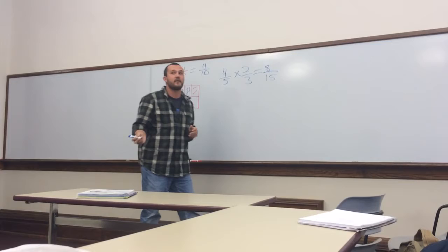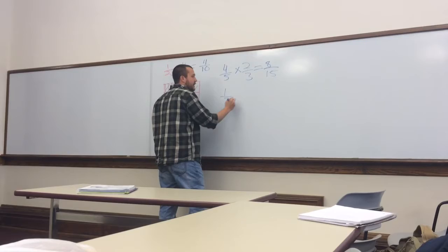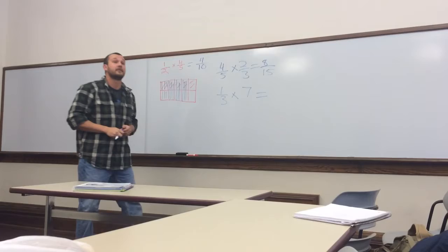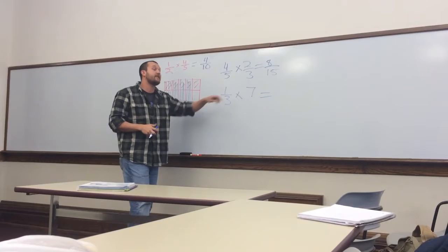Let's do another one, okay? This one's going to be a little trickier, but we can still do it. Okay, so we have 1 third, and we're going to multiply that by 7. Okay, what would be our first step, Jack? Would we turn the 7 into a fraction?